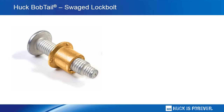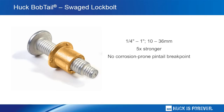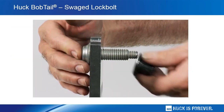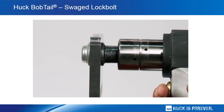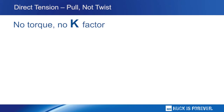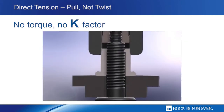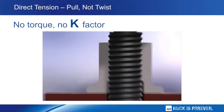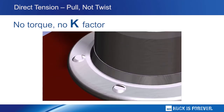A leading example of a swaged lock bolt is the bobtail, here shown as a fastener bolt and collar on the left, and as an installed fastener on the right. The bobtail is available in diameters ranging from ¼ to 1 inch, 10 to 36 millimeters. It delivers five times the fatigue strength of conventional nuts and bolts. Since it is installed with a smooth swaging motion, the installed bobtail does not leave a corrosion-prone pintail breakpoint. Installation is fast — less than two seconds using lightweight tooling. As shown in the installation diagram, the tool grabs the tail of the bobtail, pulls up on the bolt while swaging the collar into the grooves of the bolt, achieving a reliable, strong, and fully vibration-resistant installation in less than two seconds.